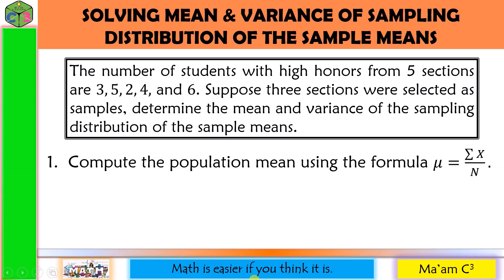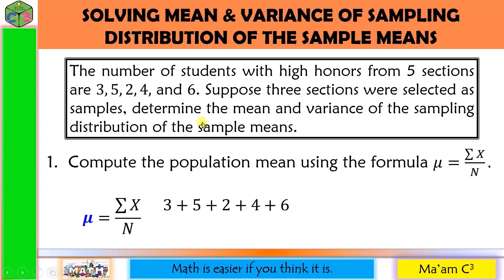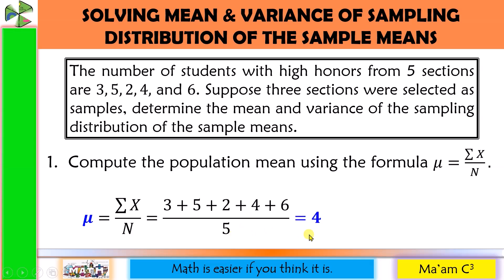Step 1: Compute the population mean using the formula mu equals summation of x over n. Summation of x means you just have to add all the x values and then divide by your population size n, which is 5. So 3 plus 5 is 8, plus 2 is 10, plus 4 is 14, plus 6 is 20. Divided by 5 is equal to 4. We now have the population mean.